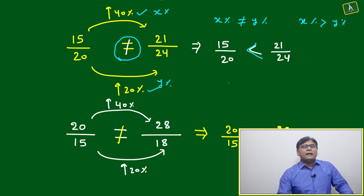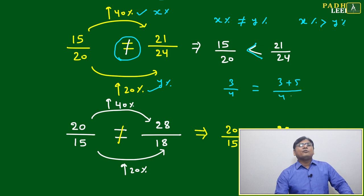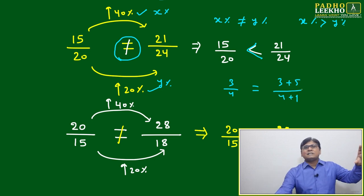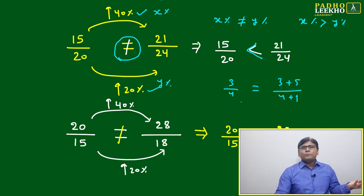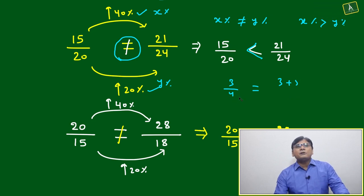Also we know, any ratio you can take, three by four. If you are adding here three plus five and you are adding here four plus one, without considering the percentage also, directly you can say eight by five will always be more than three by four.